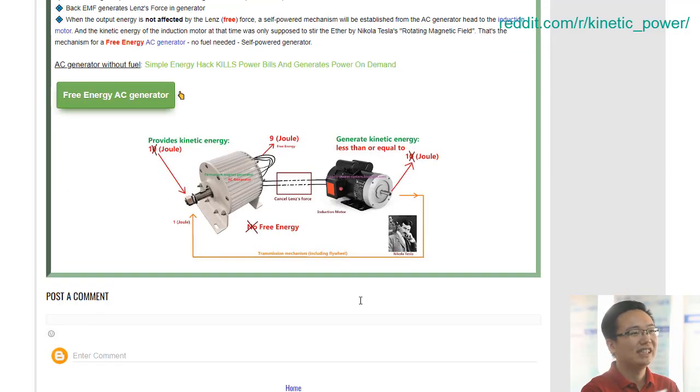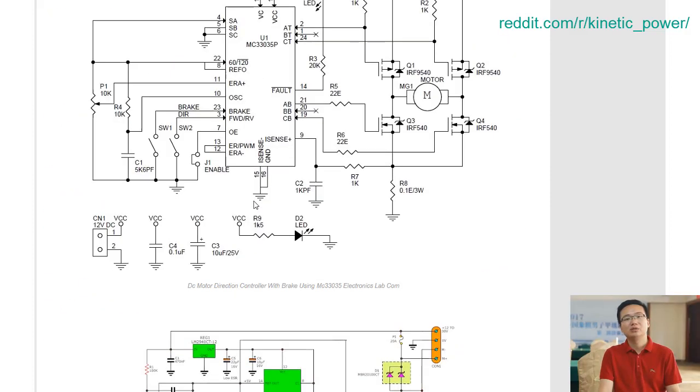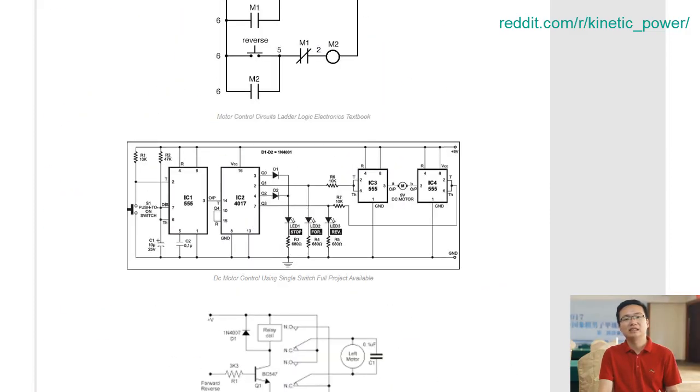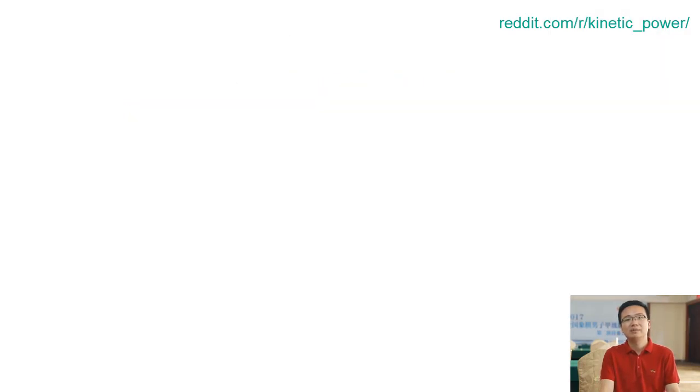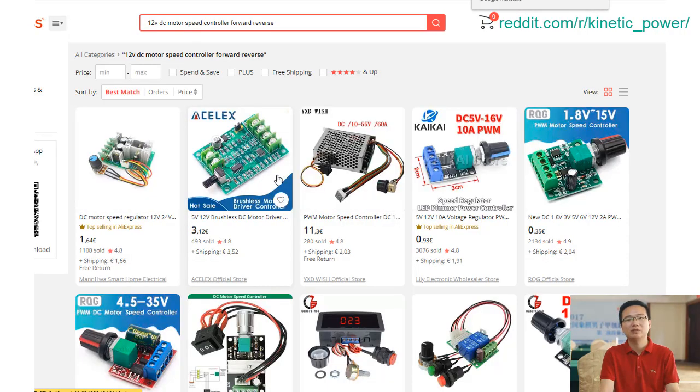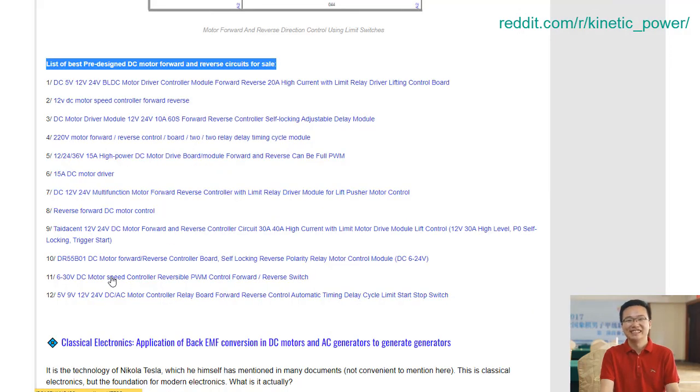Back EMF conversion is a process used to create free energy generators by converting the energy produced from a DC motor and AC generator into usable power. This technology has revolutionized many industries, allowing for powerful, self-powered devices which require no external source of power. By applying this process to a DC motor forward and reverse circuit, it is possible to generate electricity with no external input or cost.